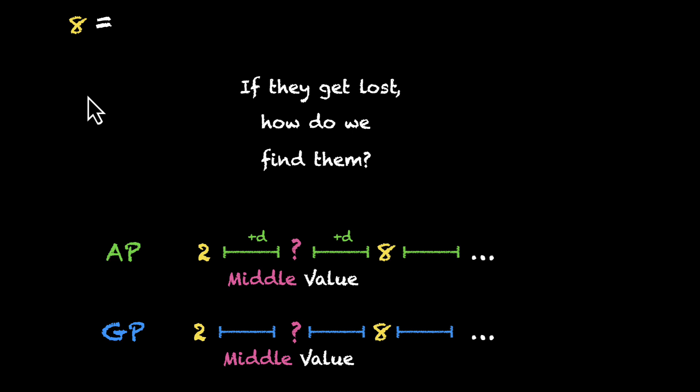We have 8 that's equal to this middle value plus d. And this middle value is equal to 2 plus the same common difference d. Now we're not interested in the common difference. We want the middle value. So let's subtract these equations. What we get is 8 minus the middle value gives us the middle value minus 2. A little rearranging will give us 2 times the middle value equals 8 plus 2. And if you solve this, 8 plus 2 is 10, 10 by 2 is 5. So we get the middle value is 5.